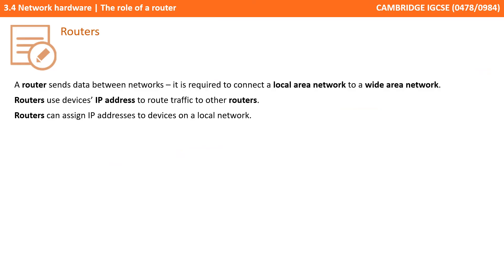So to recap: a router sends data between networks. It's required to connect a local area network to a wide area network. Routers use devices' IP addresses to route traffic to other routers. And routers can assign IP addresses to devices on a local network.